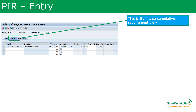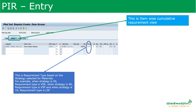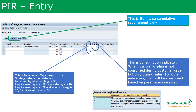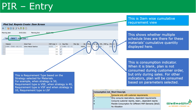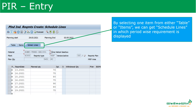In the item-wise cumulative requirement view, we see the requirement type based on the planning strategy — for example, strategy 10 means LSF, 40 means VSF, 50 means VSE. The consumption indicator shows whether the plan is consumed during the customer order or only during the sales order, with options 1 through 4. If multiple schedules exist, the system shows a schedule tick line for that item, indicating the total quantity has multiple schedule lines underneath.